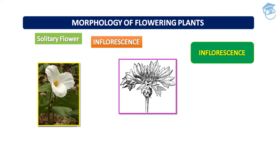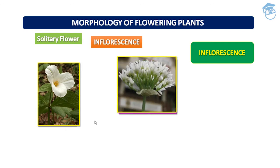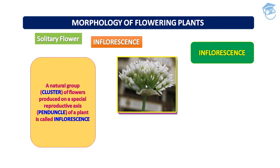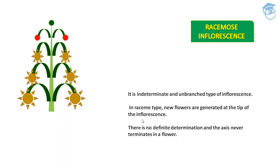Depending on whether the apex gets converted into a flower or continues to grow, two major types of inflorescence are defined: first is racemose and second is cymose. Inflorescence is a natural group or cluster of flowers produced on a special reproductive axis called the peduncle. This cluster of flowers on a peduncle is called inflorescence.